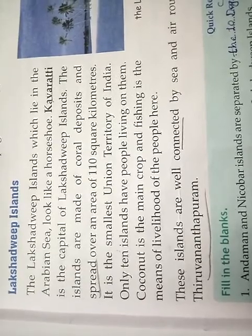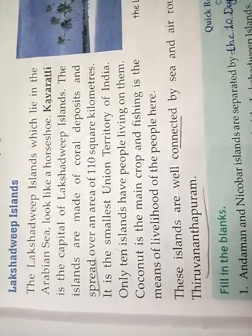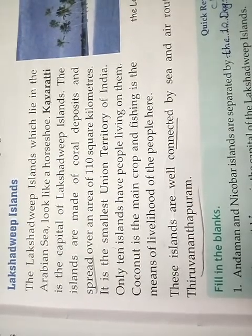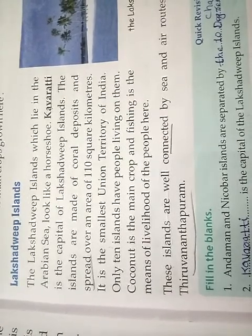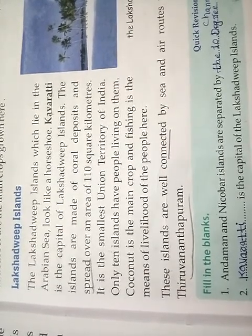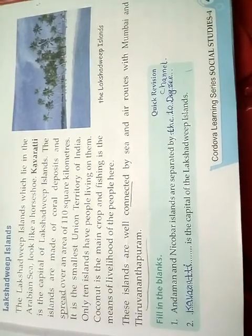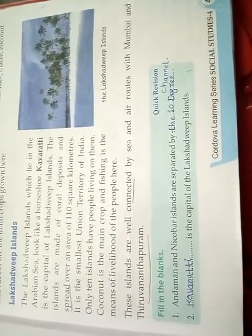The Lakshadweep islands lie in the Arabian Sea and look like a horseshoe. Kavaratti is the capital of the Lakshadweep islands. The islands are made of coral deposits and spread over an area of 32 square kilometers. It is the smallest Union Territory of India. Only 10 islands have people living on them. Coconut is the main crop and fishing is the main means of livelihood. This is a picture of the Lakshadweep islands. These islands are well connected by sea and air routes with Mumbai and Thiruvananthapuram.